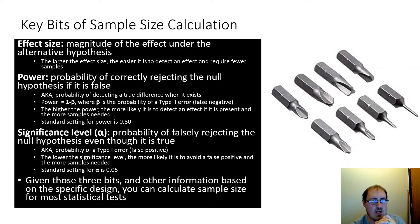First is effect size, which is the magnitude of the effect under the alternative hypothesis. That is, how big of a difference between the null hypothesis, so nothing happening, and the alternative, something happening.